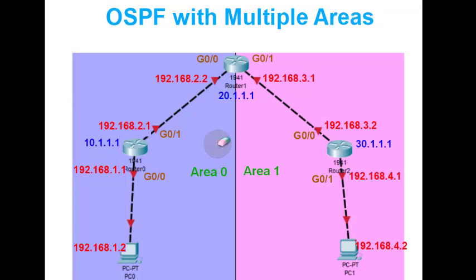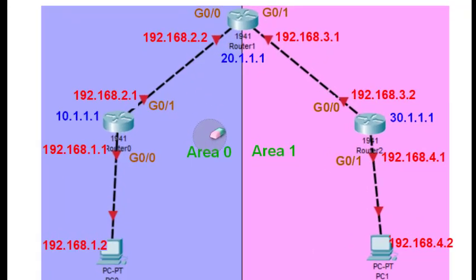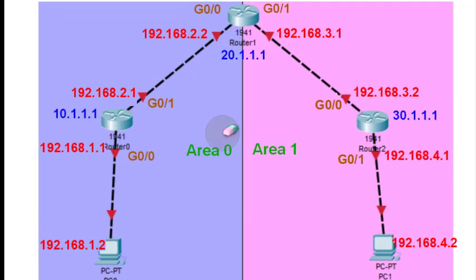This is the topology we will use: three routers and two PCs. As you can see, we have two areas — area 0 and area 1. Area 0 is the blue one and area 1 is the pink one.